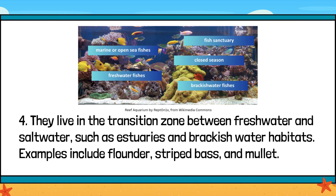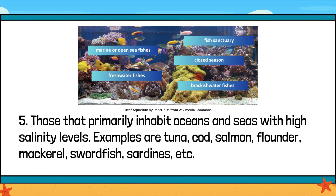4. They live in the transition zone between freshwater and saltwater, such as estuaries and brackish water habitats. Examples include flounder, striped bass, and mullet. 5. Those that primarily inhabit oceans and seas with high salinity levels. Examples are tuna, cod, salmon, flounder, mackerel, swordfish, and sardines.